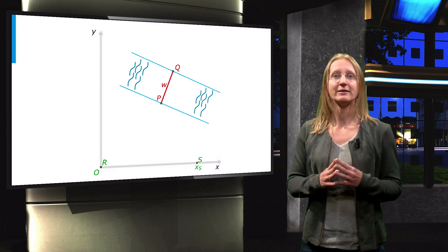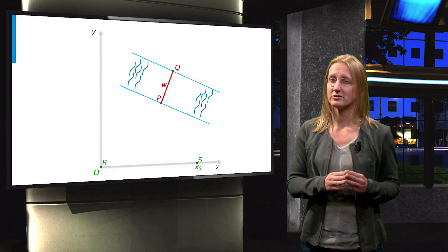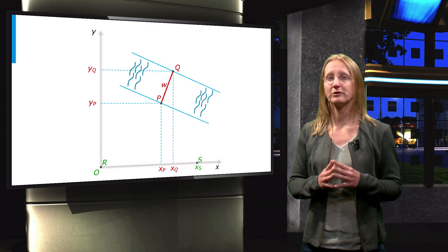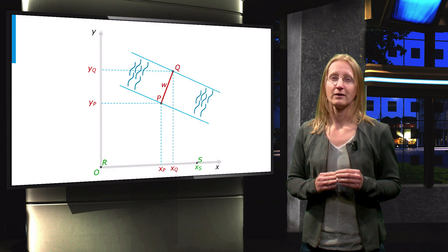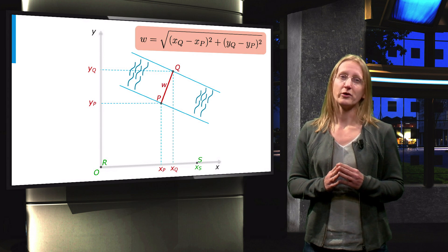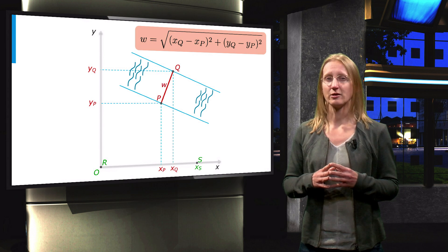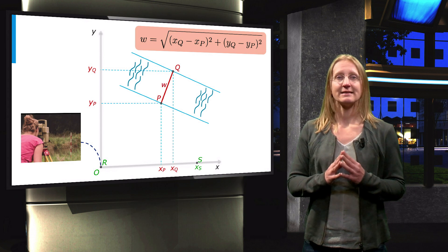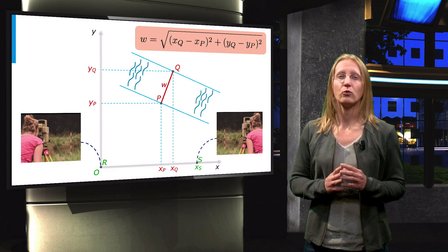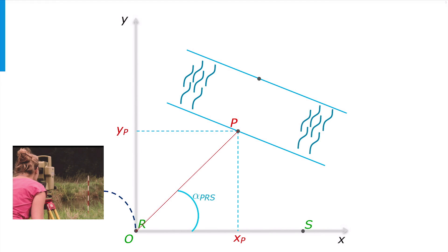The approach is to indirectly determine the kennel width by first determining the coordinates of points p and q. Like in the previous example, we know that the width w can be calculated from those coordinates with Pythagoras' law. The coordinates of p and q will be determined in a local coordinate system, where the origin is one of the points r, where the cool guys set up the instrument. The x-axis goes through point s, which is the other point where they set up the instrument. It is the angle between the directions to points p and s as measured from point r, called alpha prs.